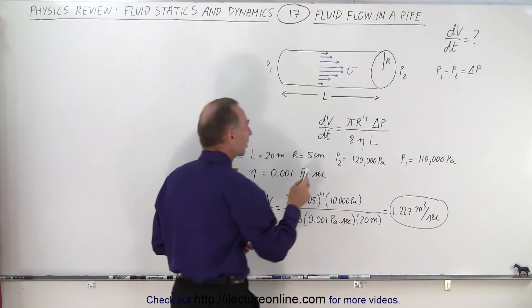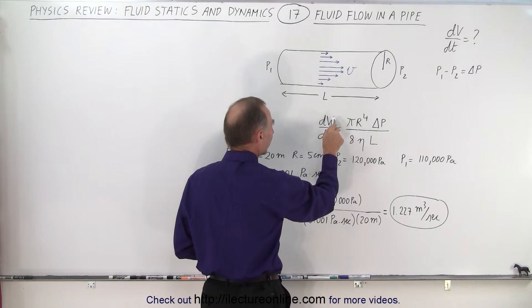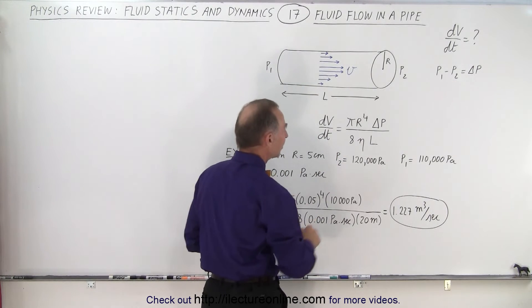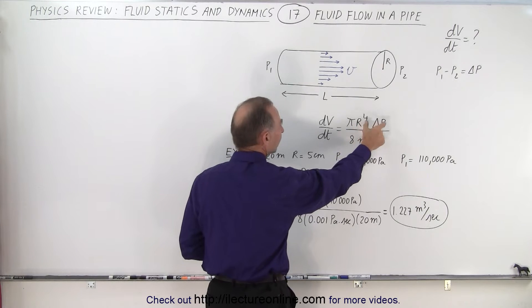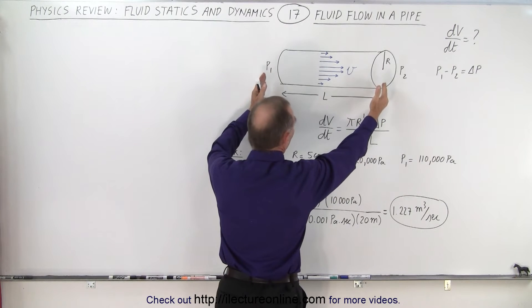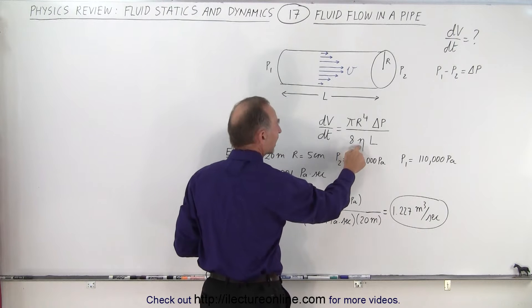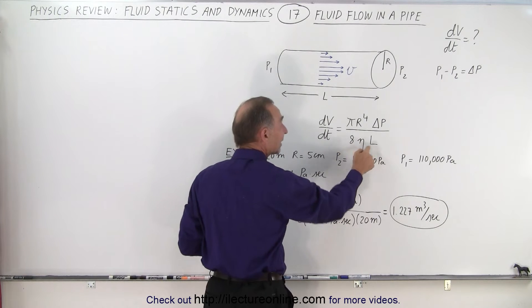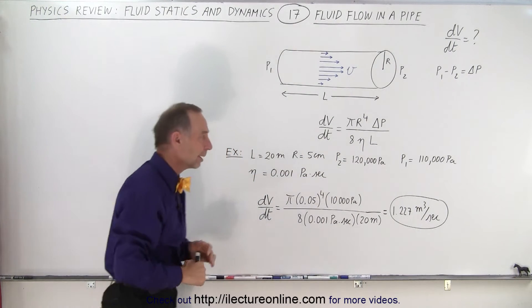So the equation then becomes that the amount of fluid flow, the amount of volume per unit time that flows through the pipe, is equal to pi r to the fourth times the difference in the pressure between the two ends of the pipe divided by 8 times the viscosity of the fluid times the length of the pipe in the denominator.